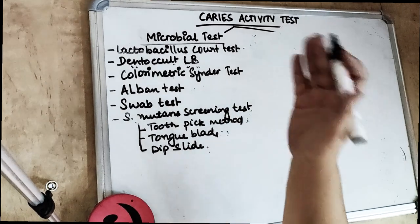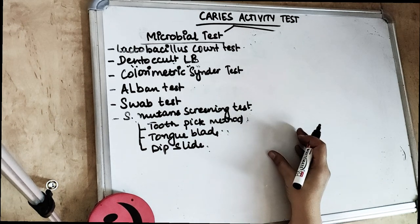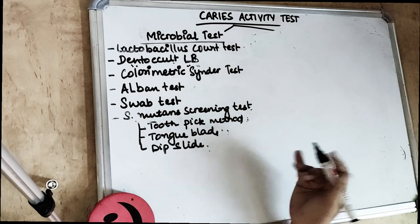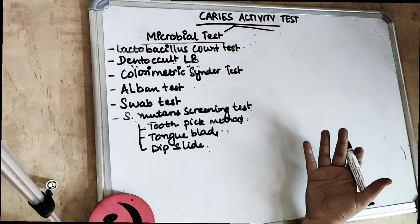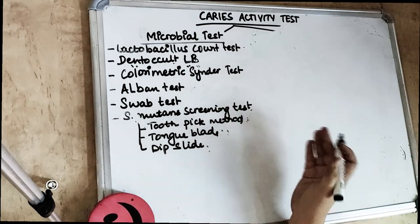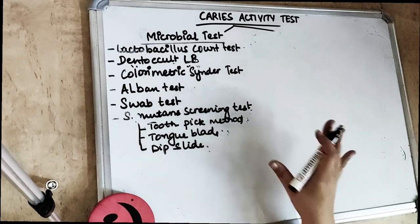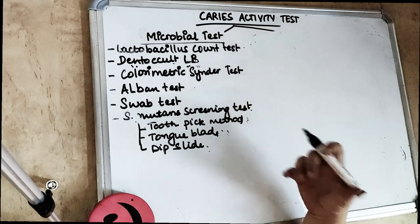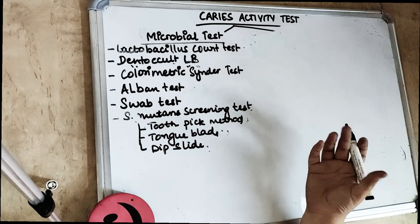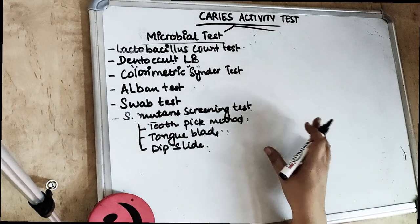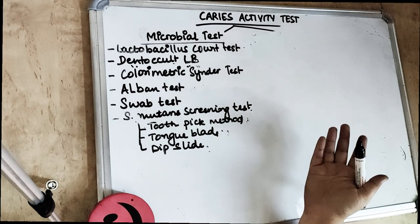First, you should know what caries activity is. Caries activity is how a caries is spreading over a period of time — the speed of progression of the caries. Caries susceptibility, on the other hand, refers to the host tendency: the inherent tendency of the individual to be susceptible to caries. Caries activity tests tell us about the state of caries activity and how the caries is progressing.